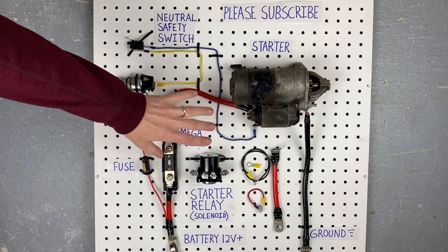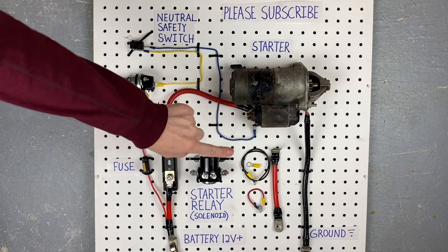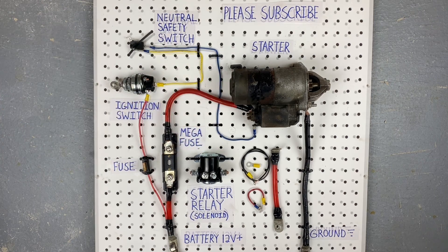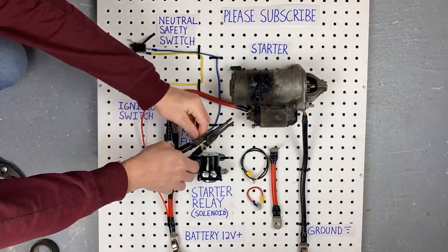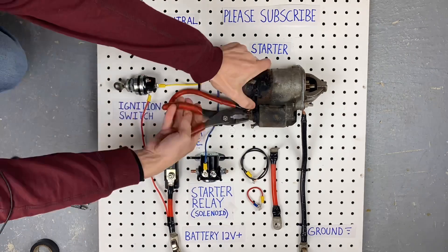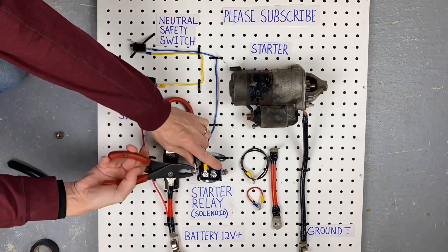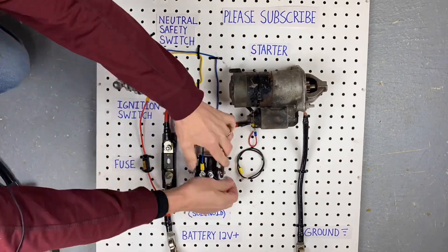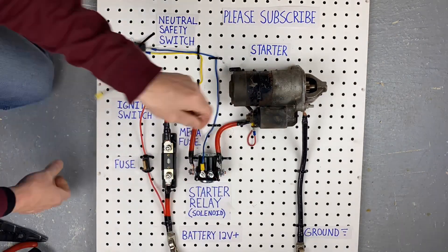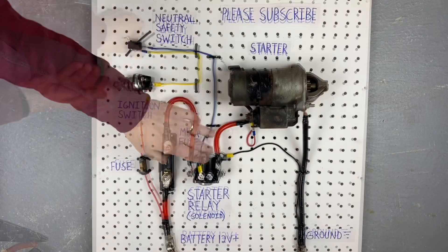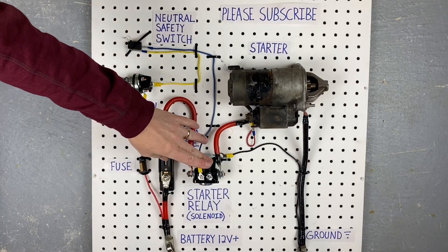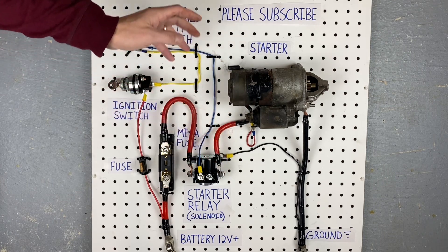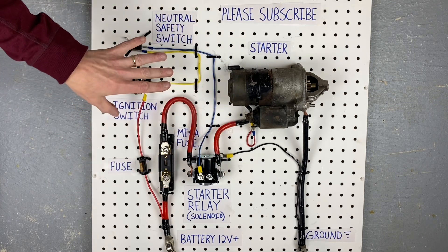Okay so now let's switch the circuit over to use this starter relay instead of the one that's built into this starter and I'll show you how that works. So we now have the Ford starter relay hooked up and you can see I basically just moved wires around. I added a couple wires but it's not a major change to the circuit.